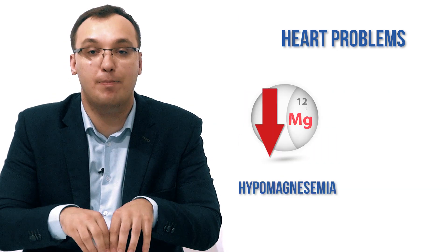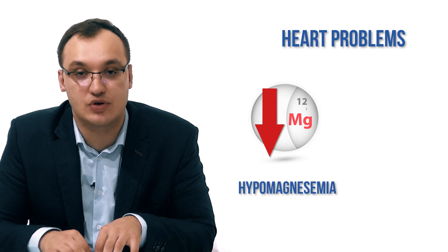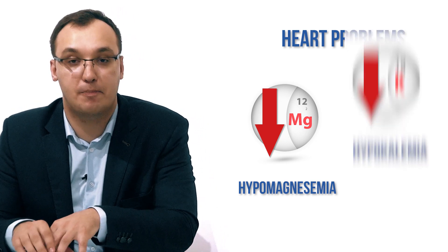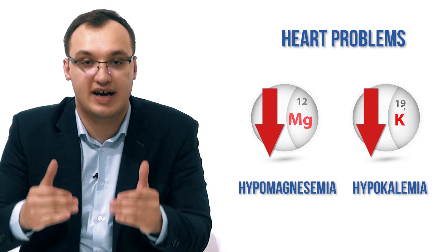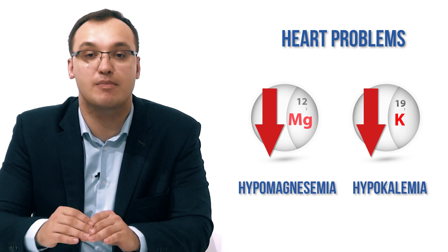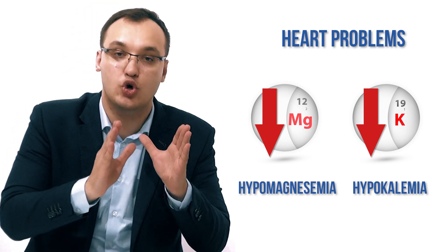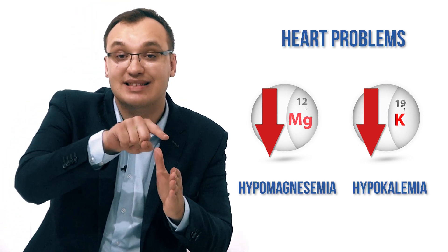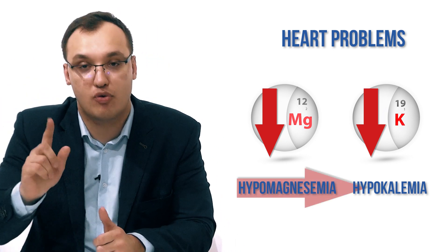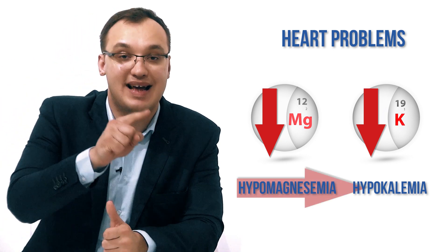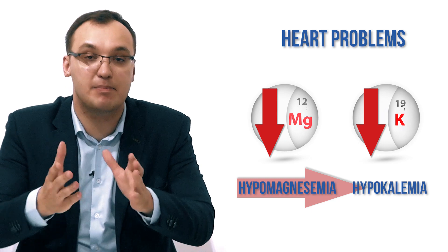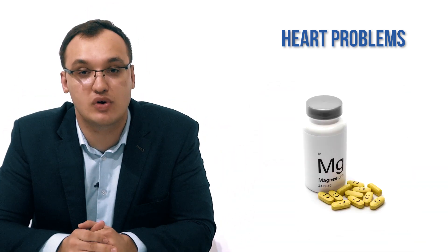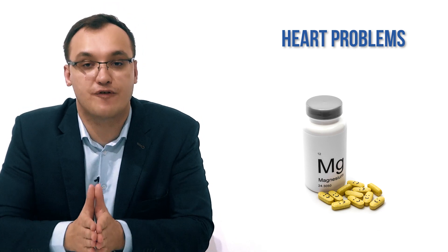When we have hypomagnesemia — a low level of magnesium — together with hypokalemia, this is even more dangerous for acute QT prolongation. Importantly, hypomagnesemia can itself cause hypokalemia. So if the patient has a low magnesium level, that may be the cause of the hypokalemia. Add magnesium, and the potassium may normalize. You need to always find and treat the underlying cause.